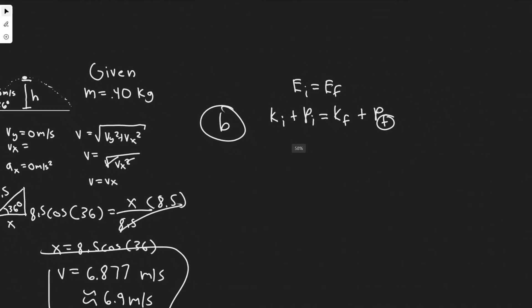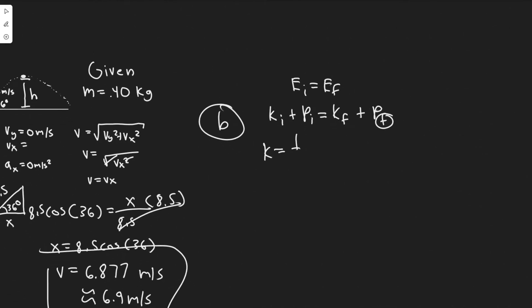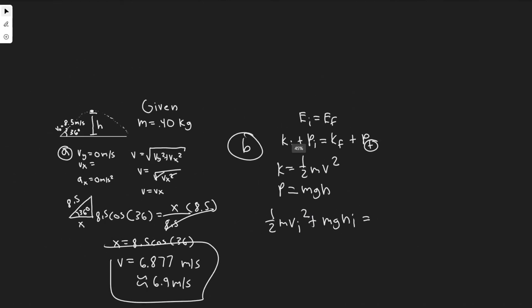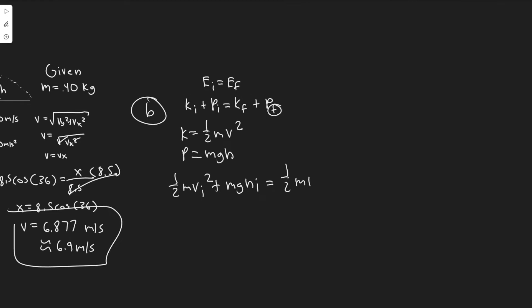We have kinetic and potential, so we need to determine the initial kinetic and potential energy and then the final. The formula for kinetic energy is one half mv squared. For potential energy I'm going to denote it with a p - it's mgh. So if we write this out it's one half m v_initial squared plus mgh_initial equals one half m v_final squared plus mgh_final. All we have to do is determine the initial height and velocity and then the final height and velocity.